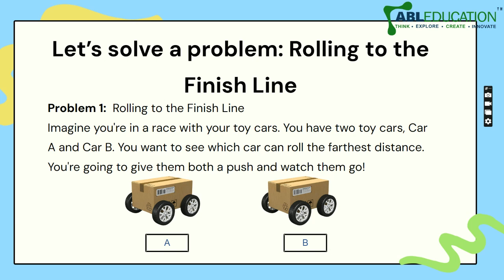Here is the solution. Imagine you are in a race with your toy cars. You have two toy cars, Car A and Car B. You want to see which car can roll the farthest distance. Give them both a push and let them go. See which car goes farther, and then try to think about why Car A or B went farther than the other. Try to think of some reasons.